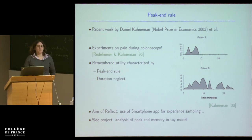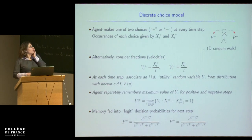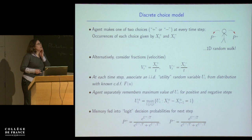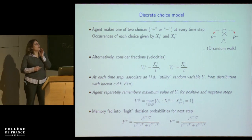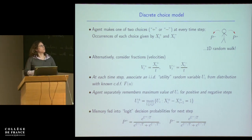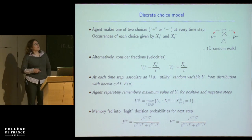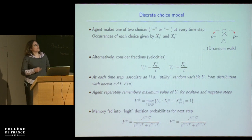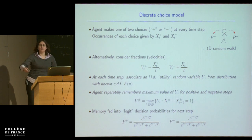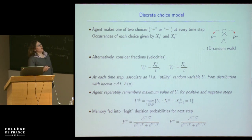I'm going to talk about a side project that came out of that: to analyse peak-end memory in a very simple toy model. I have an agent who at every time step — so we're now in discrete time — can make one of two choices, call them plus or minus. We keep track, up to some time T, of the number of times he makes the plus choice (capital X plus) and the minus choice (capital X minus), which must add up to T. This is exactly the same as having a one-dimensional random walker who hops right or left, where you track the number of steps in each direction.